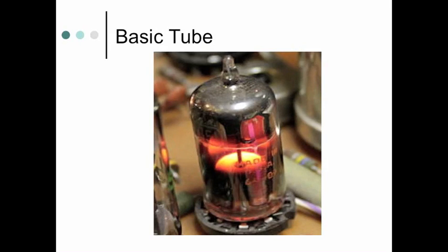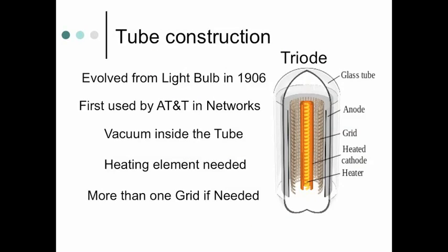It was actually originally evolved from a light bulb in 1906. The first tube was used in AT&T networks - phone companies were on top of it. A vacuum is inside the tube, so they suck out all the air inside the tube, and then they've got a heating element which is in the center and a grid going around the heating element.